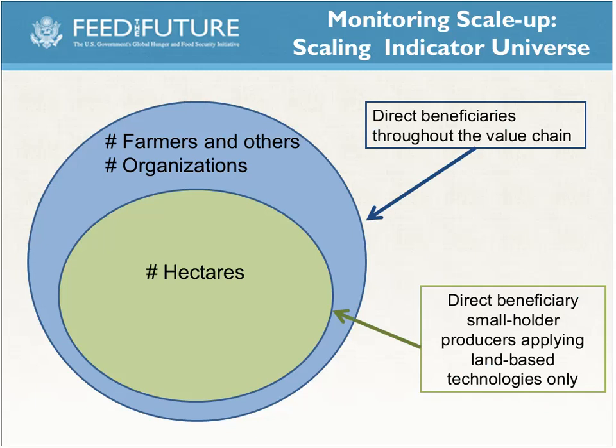The number of hectares under improved technologies is a subset of the broader group. It deals specifically with smallholder primary producers applying land-based technologies only. Large commercial farmers could be included in the number of farmers indicator, but their hectares would not be counted under the hectares indicator because they're not small primary producers. You can't use the two indicators together to derive hectares per farmer, because different types of direct beneficiaries are included in each. These indicators have nuanced differences in who they target and who can be reported.